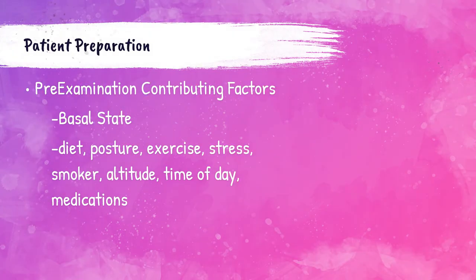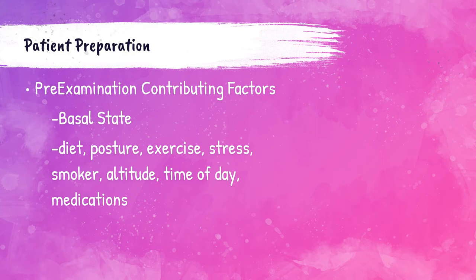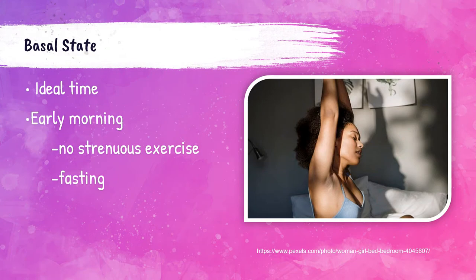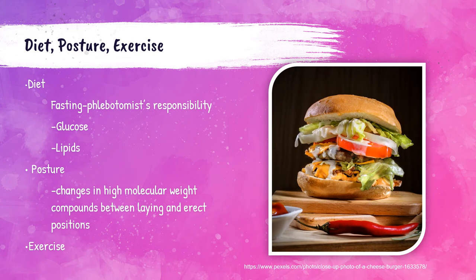The pre-analytical or pre-examination phase of laboratory testing includes the collection of blood samples. There are some pre-examination variables that deal with the patient's activities prior to specimen collection, all of which can affect the quality of the specimen. These include basal state, diet, posture, exercise, stress, the patient's smoking status, the altitude the patient lives in, the time of day the blood is collected, and any medications the patient is currently taking. The basal state is the ideal time to collect blood — early in the morning when the patient has not exercised or eaten — and these results can be compared to normal ranges to determine the patient's condition.